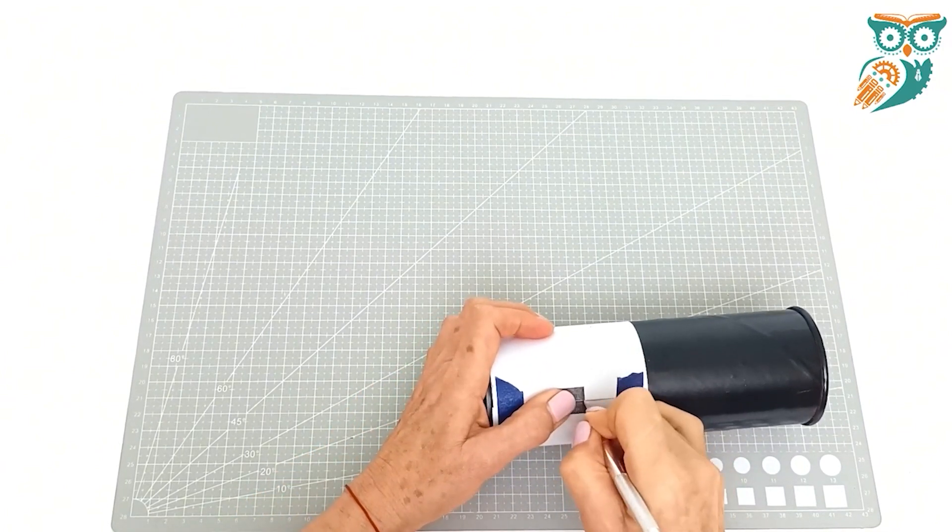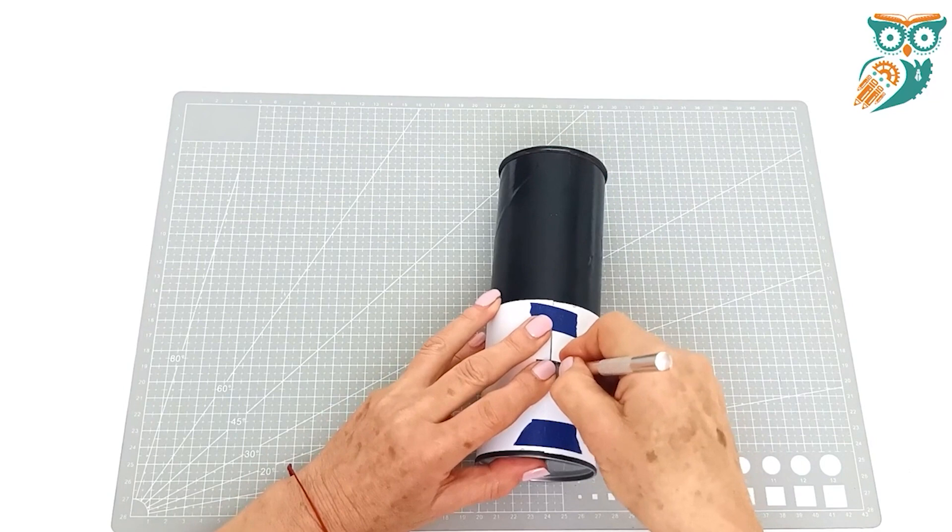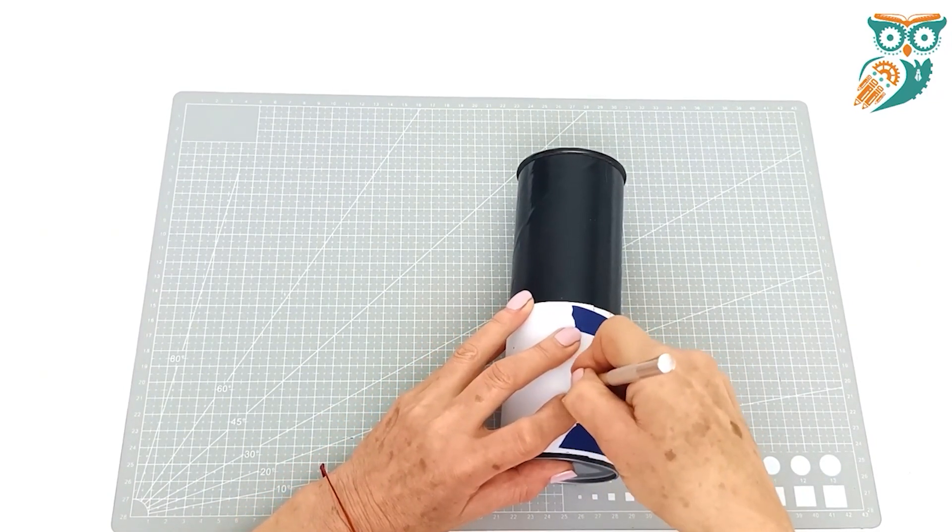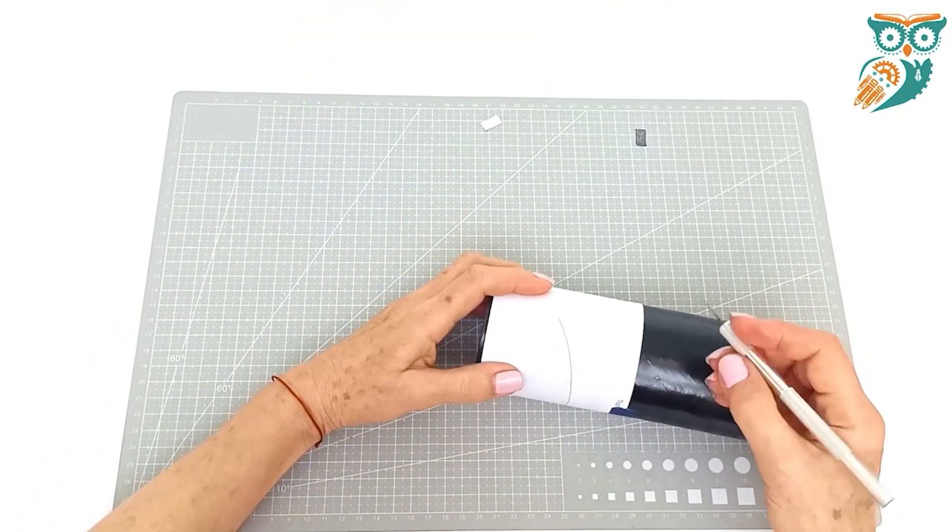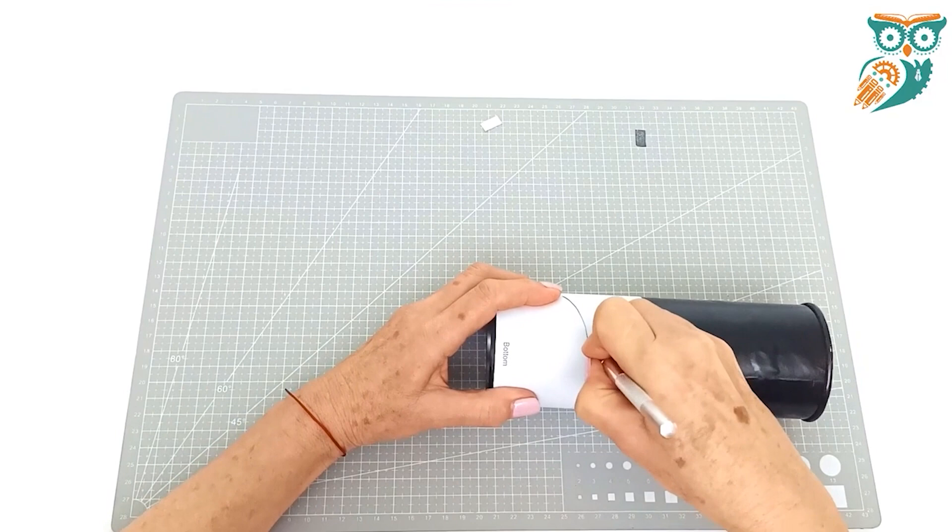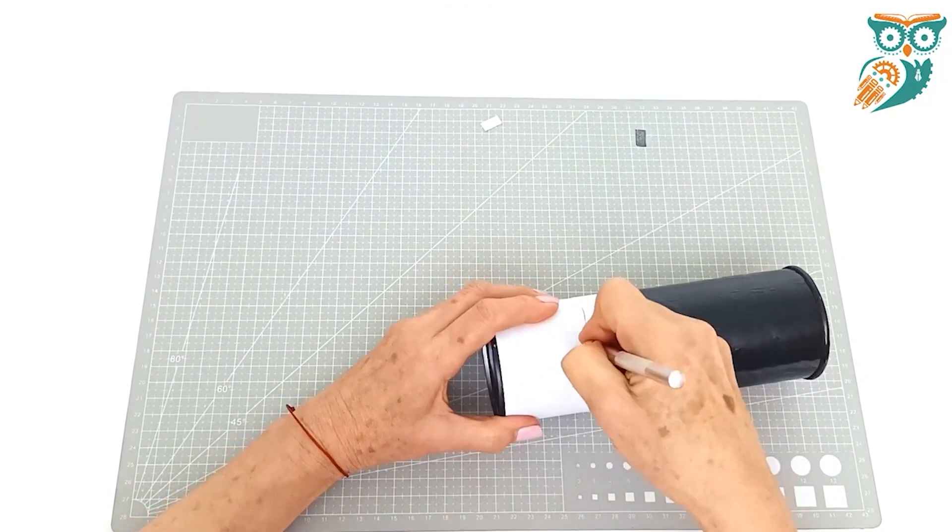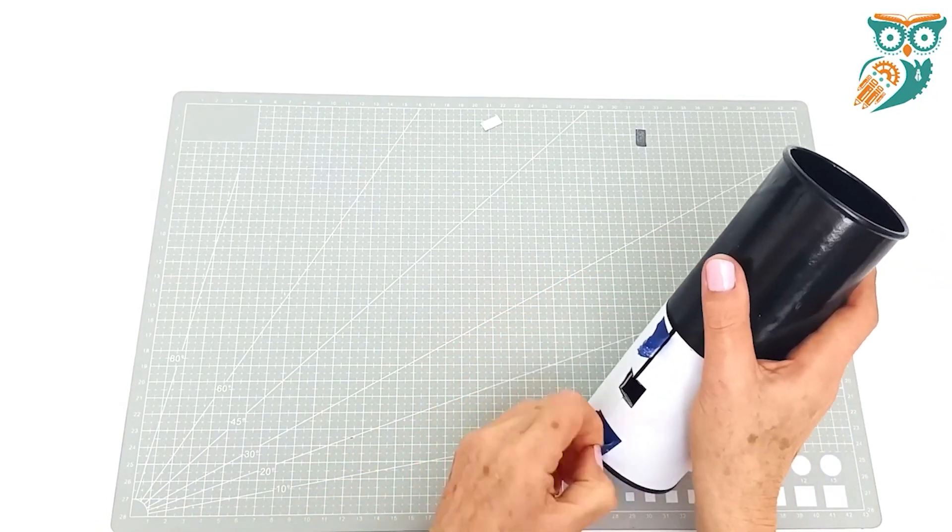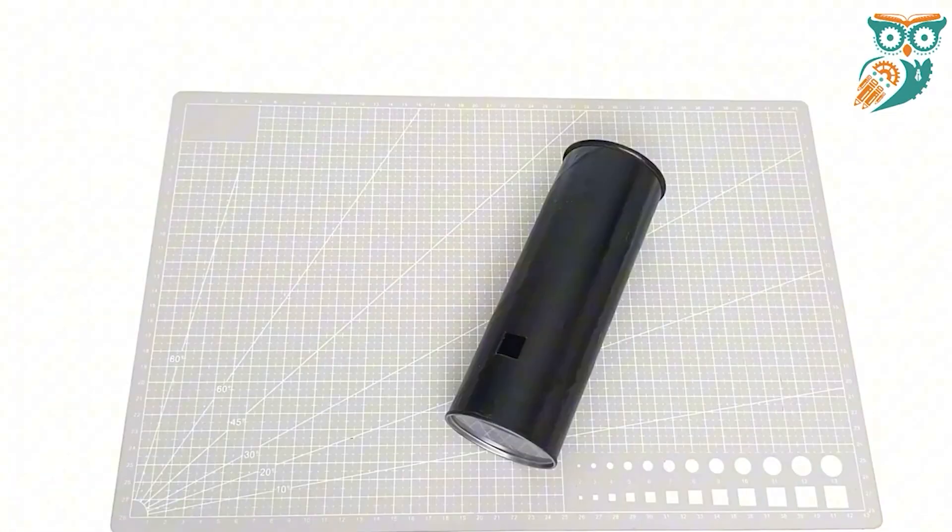Go really slow here. Depending on the age and abilities of your kids you may want to do this step yourself just to ensure safety around the sharp exacto knife. Then we're going to cut a slit on the other side. Just go nice and slow and be really careful as you do this step. Now we're going to remove the template.